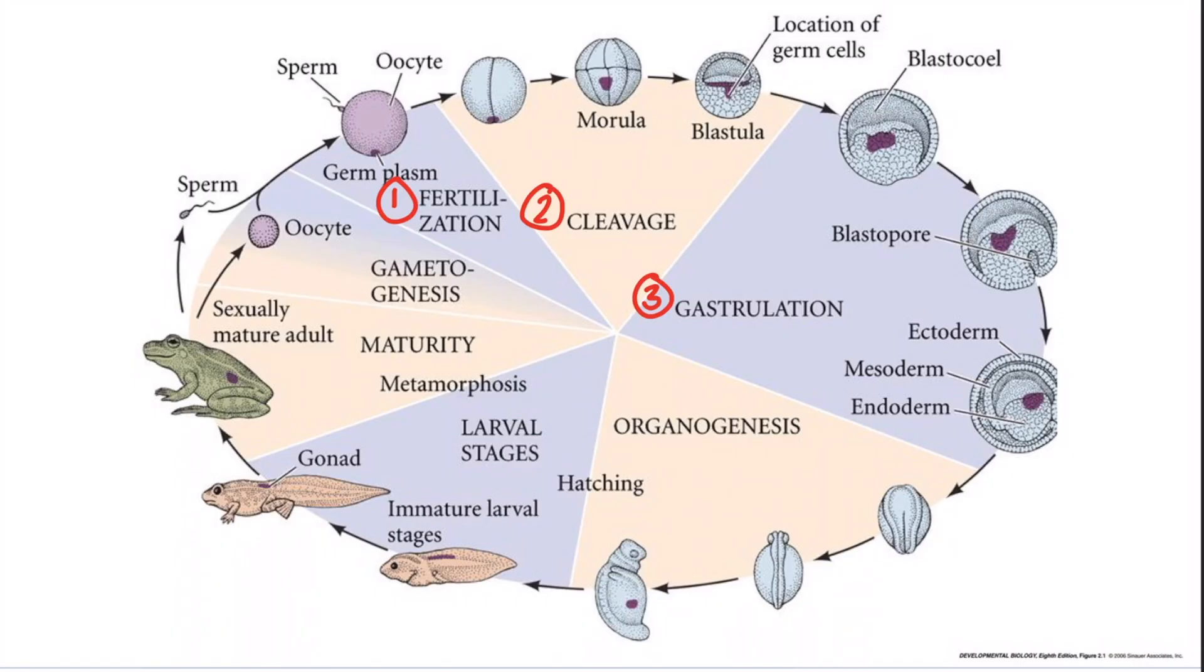The last major stage of embryonic development is organogenesis, where cells in the regions of the embryonic germ layers interact with one another through chemical signaling and rearrange themselves to develop into tissues and organs.